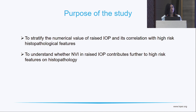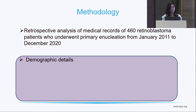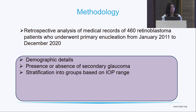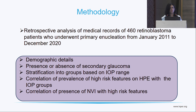We already know that glaucoma is a clinical high-risk feature. So why are we doing this study? Here we are trying to stratify the numerical value of raised IOP and its correlation with high-risk histopathological features, and whether NVI further adds to this risk. We retrospectively analyzed the medical records of 460 retinoblastoma patients who underwent primary enucleation from January 2011 to December 2020. Factors noted were demographic details, presence or absence of secondary glaucoma, stratification based on IOP range, and correlation with high-risk features on histopathology.